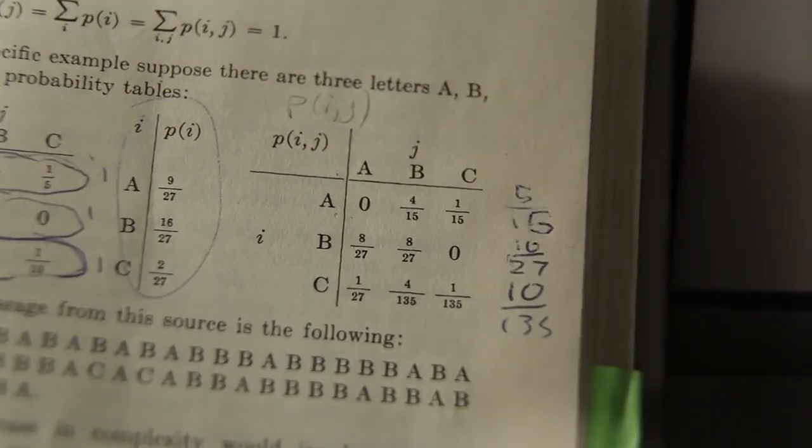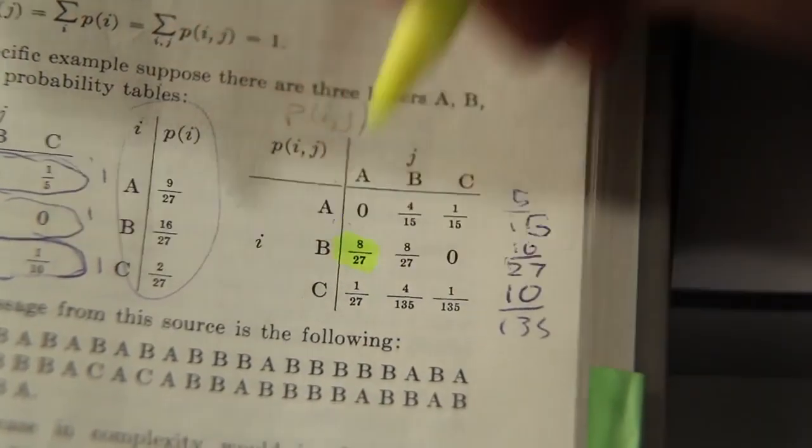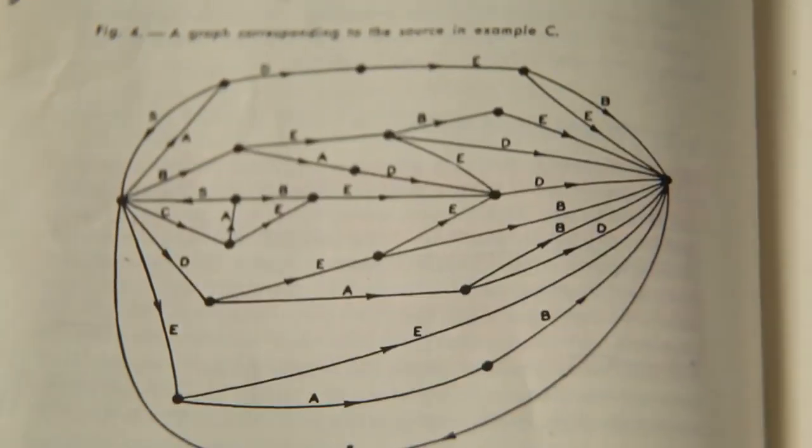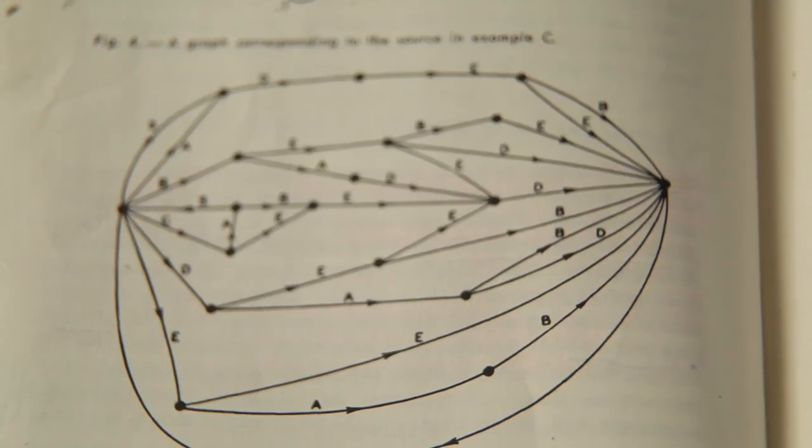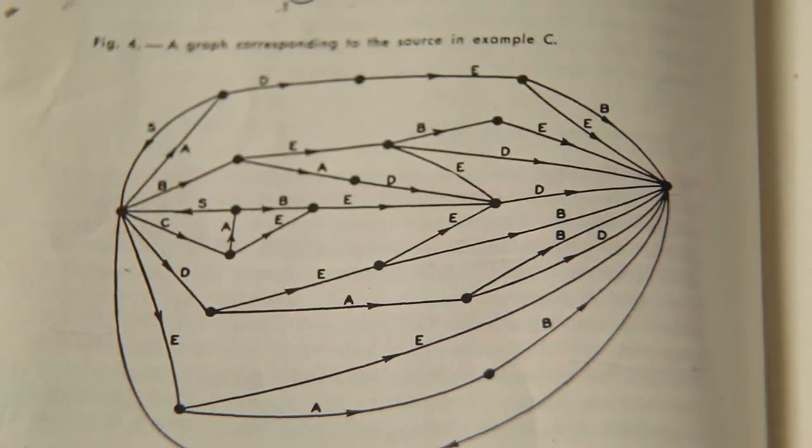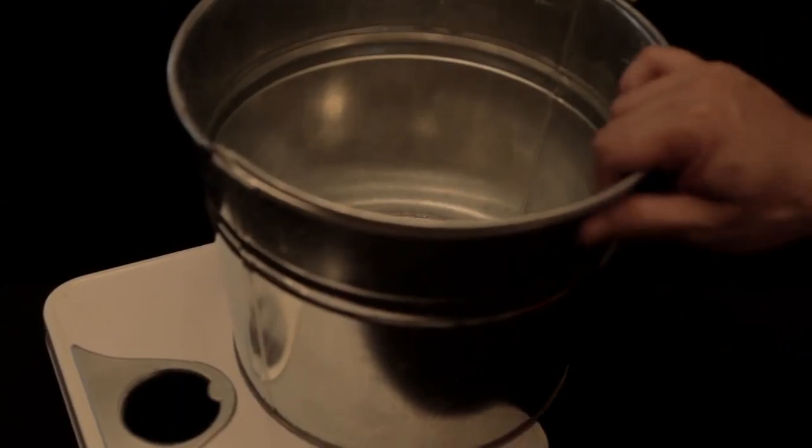Shannon proceeds to define a quantitative measure of information, realizing that the amount of information in a message must be tied to the design of the machine which could generate similar-looking sequences. This brings us to his concept of entropy.